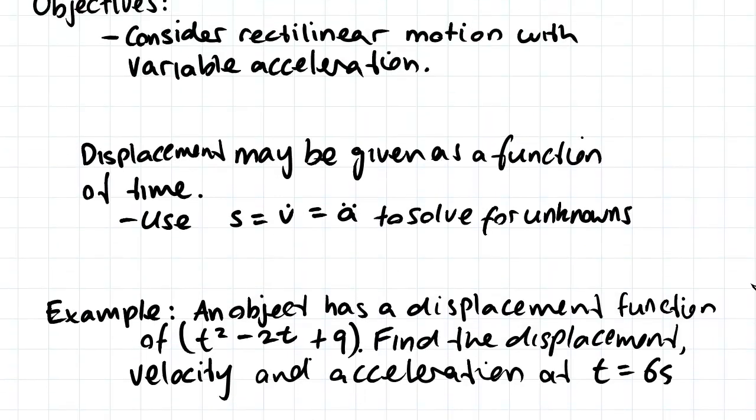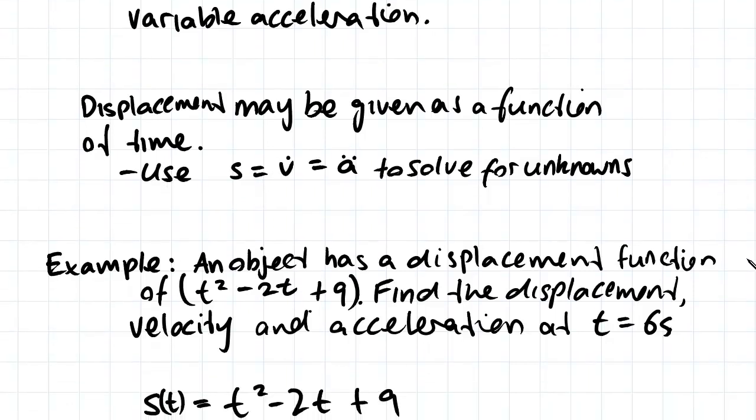Looking back above we have a function for displacement and if we want to work out velocity we need to derive this function. We'll start off by just looking at the displacement because we can work out the displacement at 6 seconds straight away because we have that relationship.